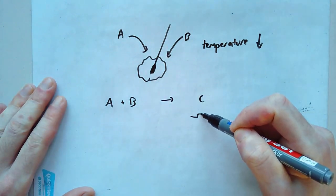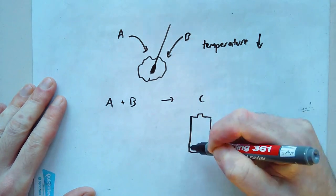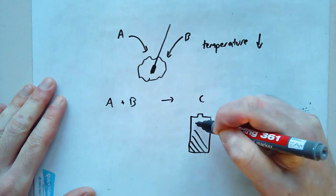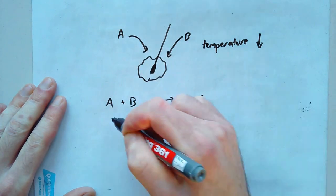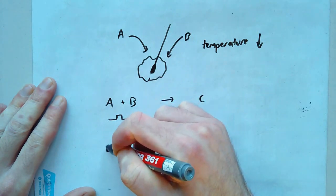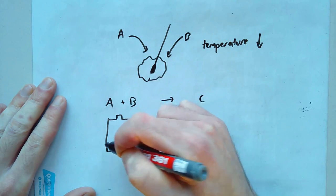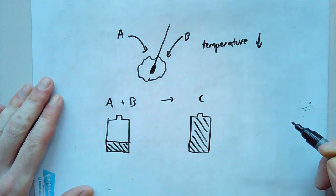In this case, C has absolutely tons of energy. But A and B between them have only got a little bit of energy.